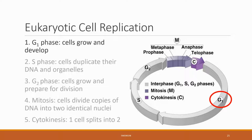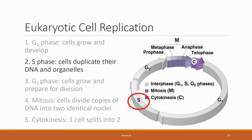G1 is the first phase of interphase and occurs just after cytokinesis, so just after two new cells form. Cells are conducting, in this phase, normal cellular processes like growing in size, synthesizing different parts of the cell, and other general metabolism.